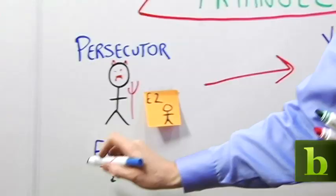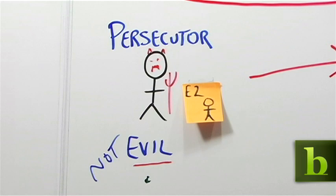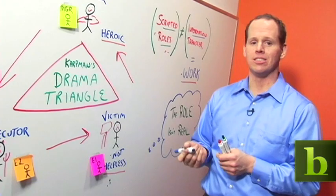What if Employee 2 is not evil? What if Employee 2 doesn't have the data, doesn't know how to get it, doesn't know how important it is, has too many other priorities and is too busy? What options does that suggest?